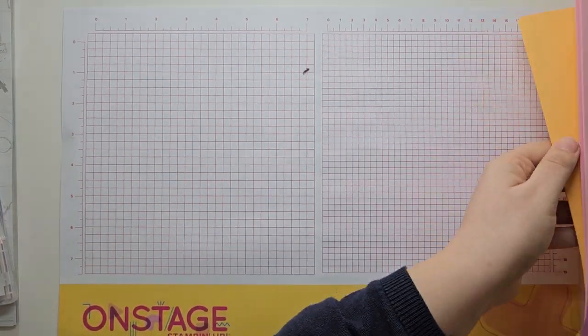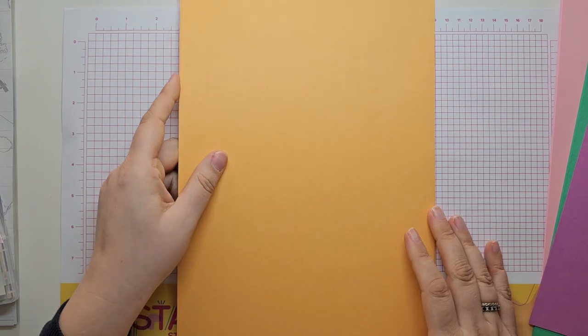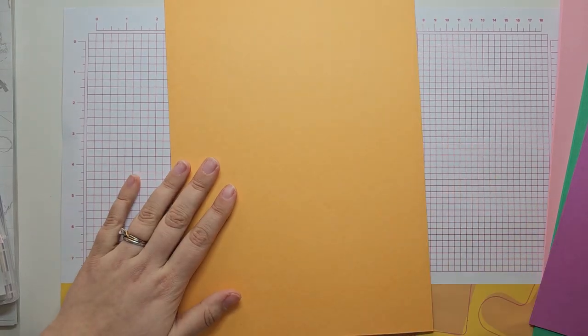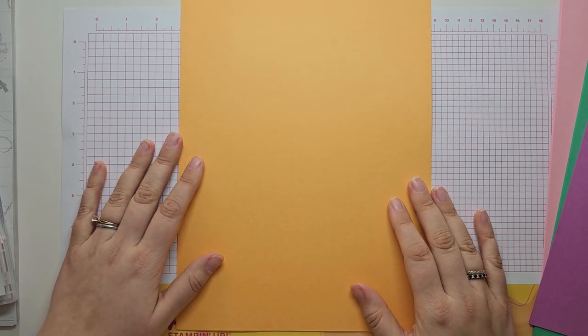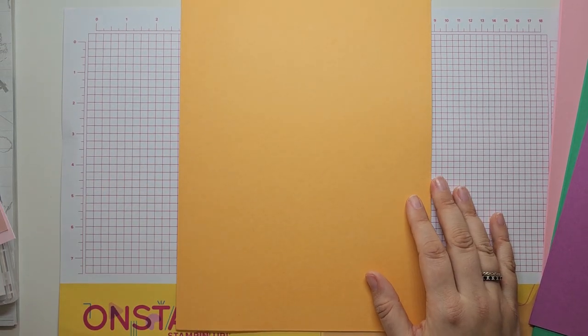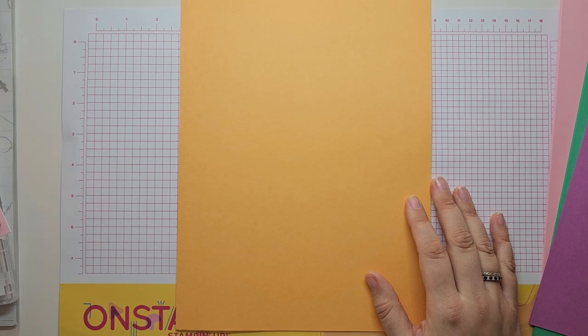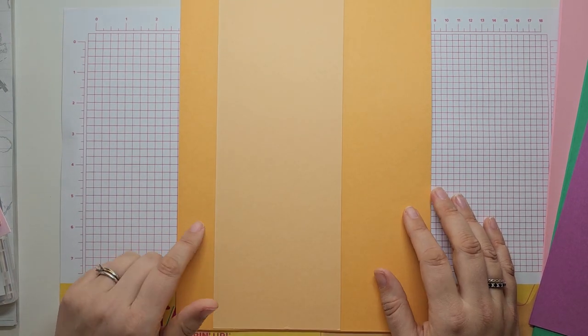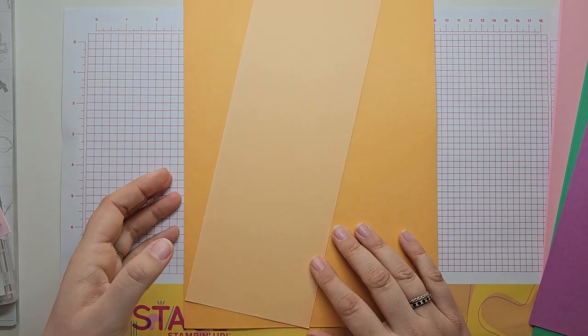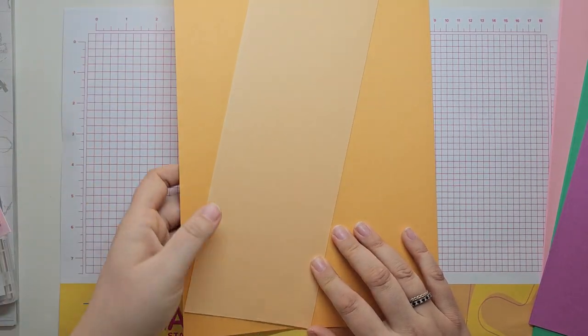Then we'll go with Peach Pie next. I looked at that and thought that looks a bit similar to Pale Papaya, which is an old in colour. But actually, Pale Papaya was a lot lighter. So that's the colour comparison for that one.